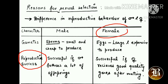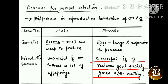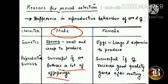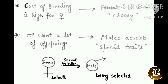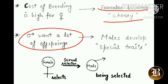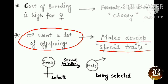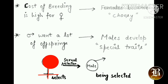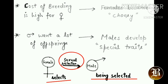Female gametes, or eggs, are generally larger in size and expensive to produce, so females invest a lot of energy in gamete production. Females are considered reproductively successful when they receive good quality genes, which happens only if they select a male with good characters. So males want a large number of offspring, whereas females want good quality genes. Both show reproductive success in different ways. Because the cost of breeding is high for females, females are choosy. Males develop special traits to attract females. The female always selects and the male is always being selected — this process is known as sexual selection.